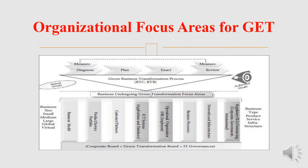Corporate Board, Green Transformation Board, and IT Governance. The business size may vary from small business, medium business, large and globally running business, to virtual business. The business model undergoes green transformation focus areas. You will be having the business model, the product and service portfolio, customers and partners, ICT systems, applications and databases, the operational organization, HR and employees, the business process, networks and infrastructures, regulatory bodies, and service level agreements — whether outsourcing is for a corporate, government, or international organization.